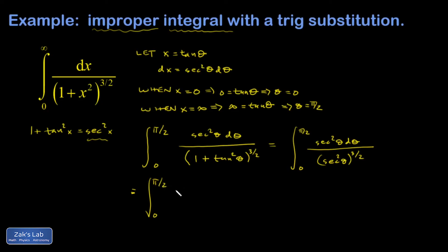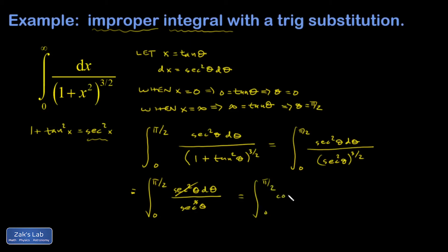I end up with the integral from 0 to pi over 2 of secant squared theta d-theta divided by secant cubed theta. Two of those factors of secant cancel, leaving just 1 over secant. Since secant is 1 over cosine, 1 over secant is just cosine theta d-theta.